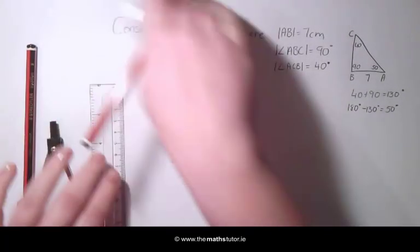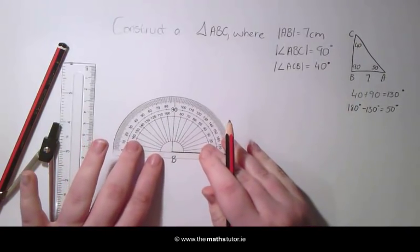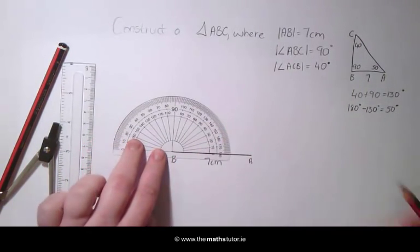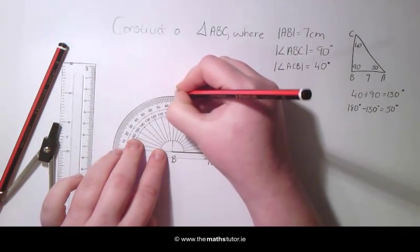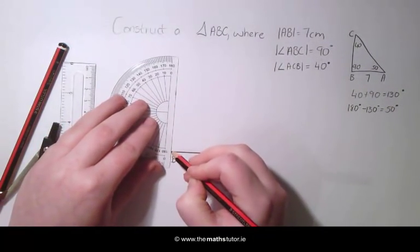We can see that we have an angle of 90 degrees at the point B. So placing a protractor at the centre on B, mark an angle of 90 degrees. We are going to draw a line through this.